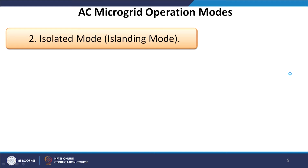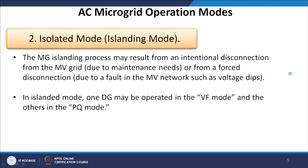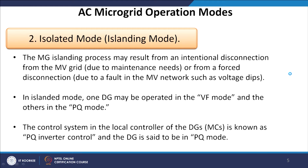In isolated mode of operation, the microgrid islanding process may result from an intentional disconnection from the medium voltage grid, or from a forced disconnection due to a fault or voltage dip. In islanded mode, one DG may be operated in VF mode and the others in PQ mode. The control system in the local controller of the distributed generation is known as PQ inverter control, similar to grid-connected operations.